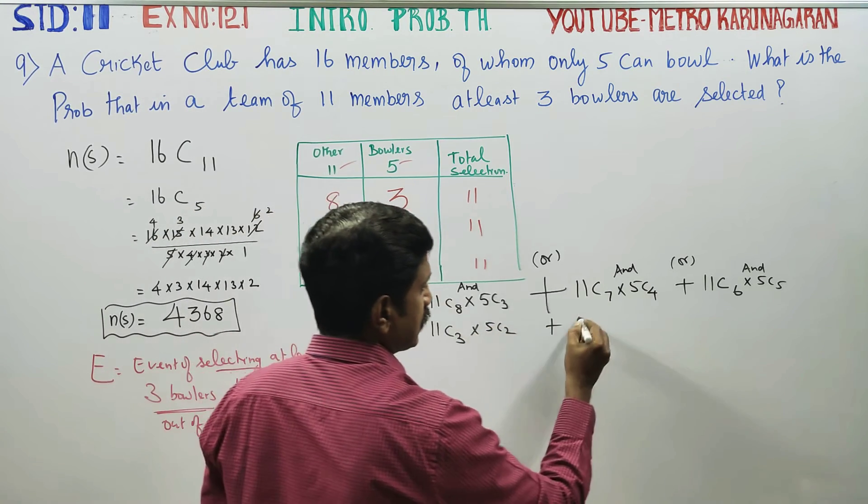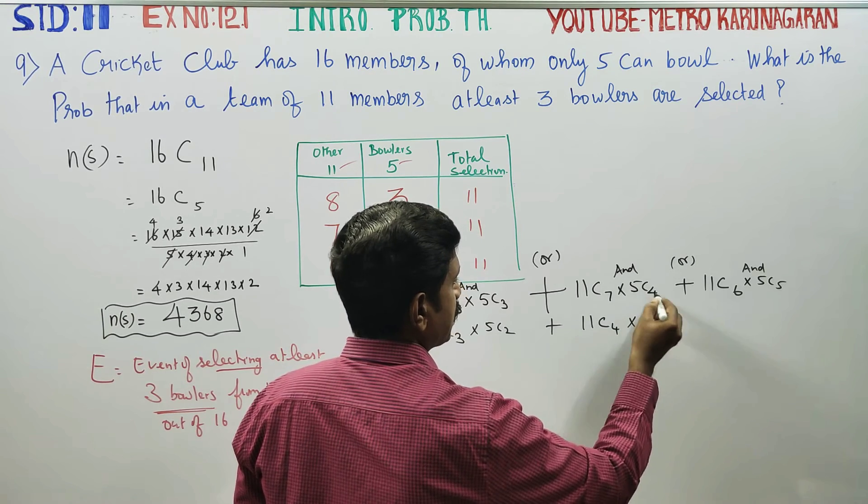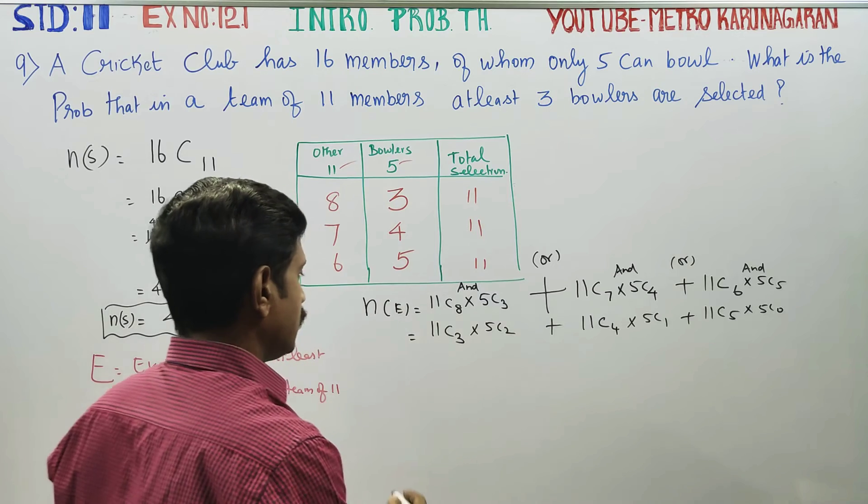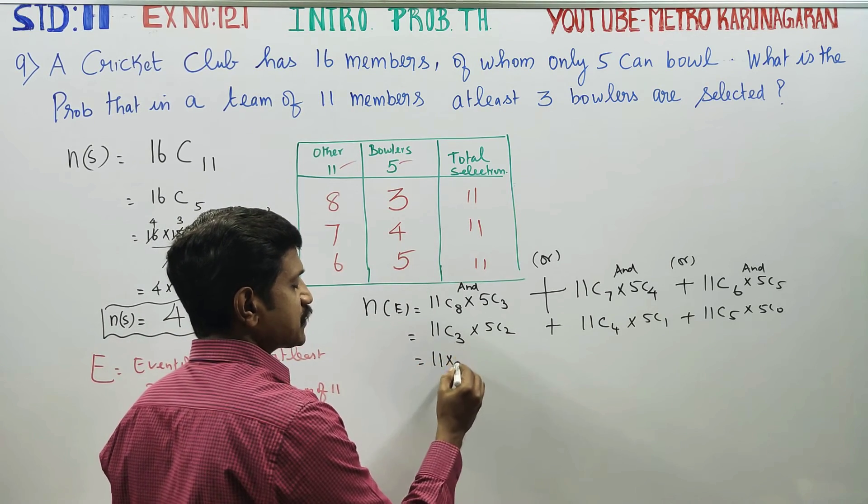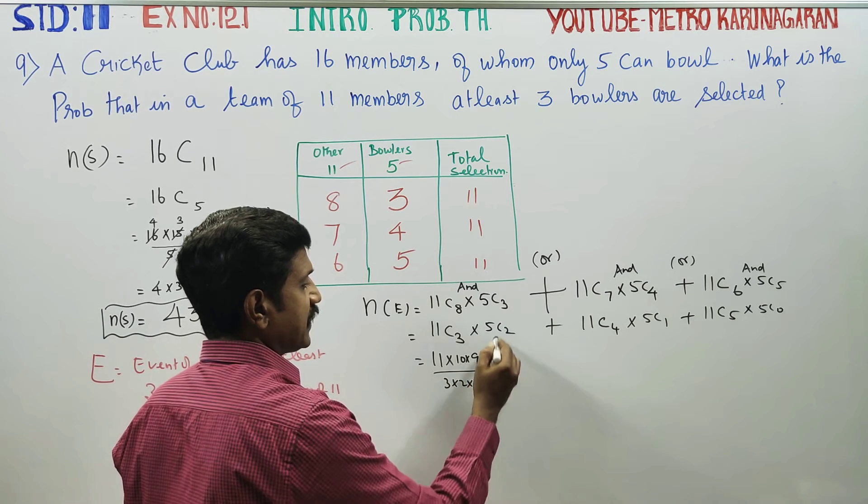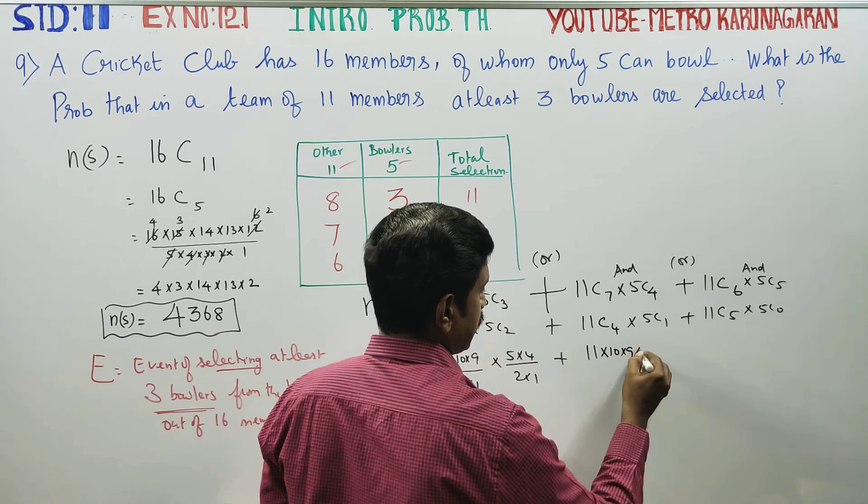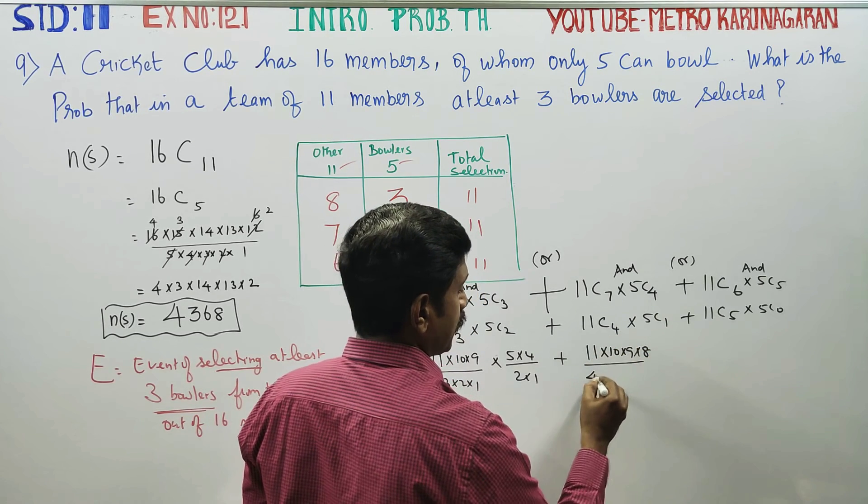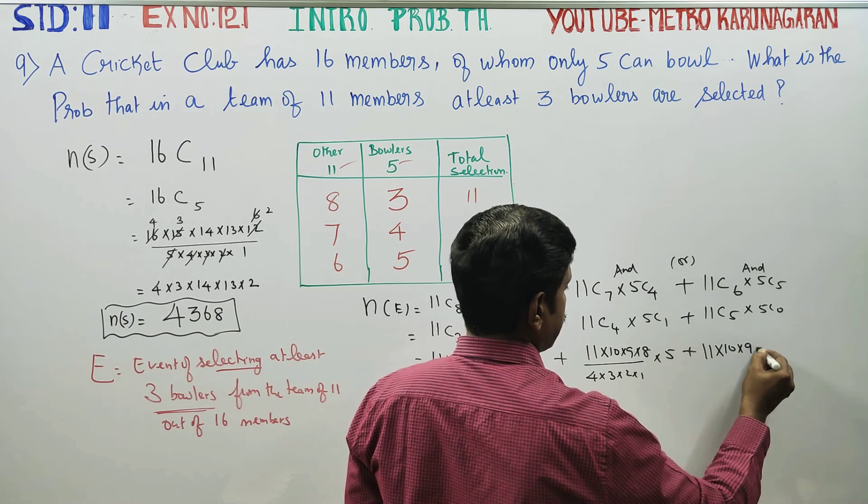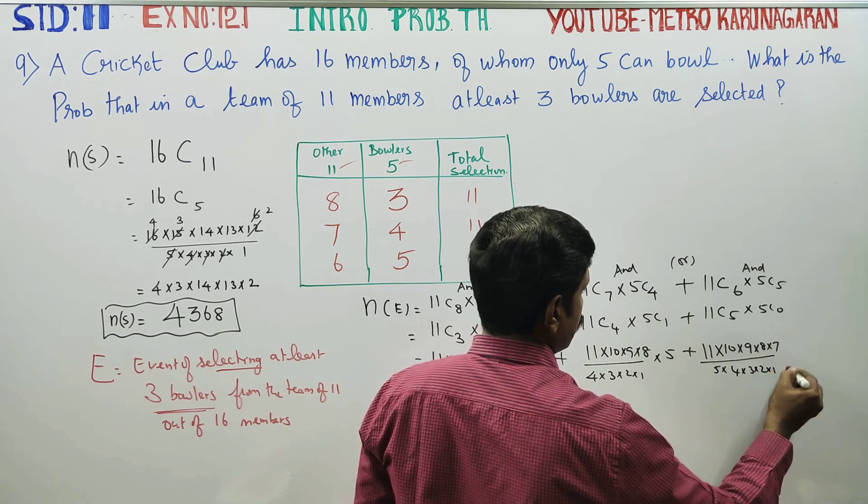5C3 can be written as 5C2. 11C8 can be written as 11C4. 5C4 is 5C1. 11C7 is 11C5. 5C5, 11C6. Now, 5C2 is 11, 10, 9, 8 by 4×3×2×1. 5C1 is 5. 11C5 is 11, 10, 9, 8, 7 by 5×4×3×2×1. 5C0 is 1.